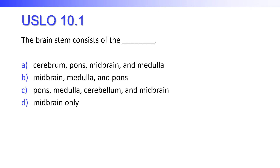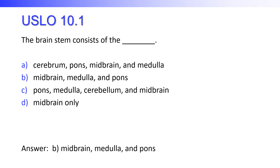The brain stem consists of: the cerebrum, pons, midbrain, and medulla; the midbrain, medulla, and pons; the pons, medulla, cerebellum, and midbrain? And it would be B — the midbrain, medulla oblongata, and pons.